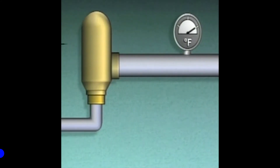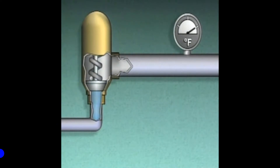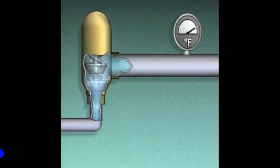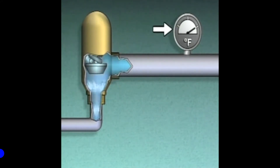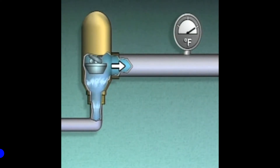We'll use this illustration to see how this happens. This valve controls the flow of refrigerant through a section of pipe. When the valve is opened, the refrigerant flows through the pipe past a thermometer. As the refrigerant flows out of the valve, its pressure decreases.